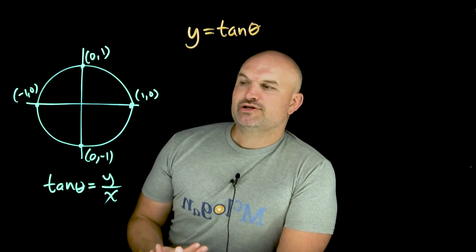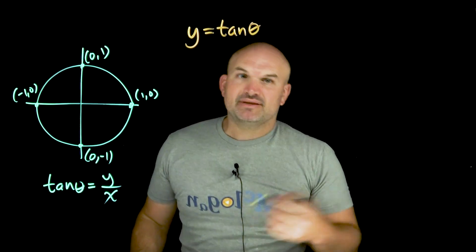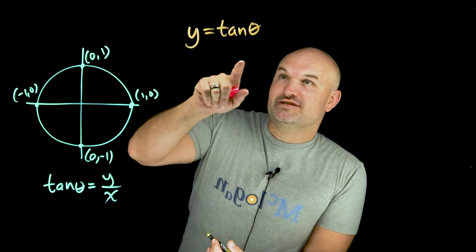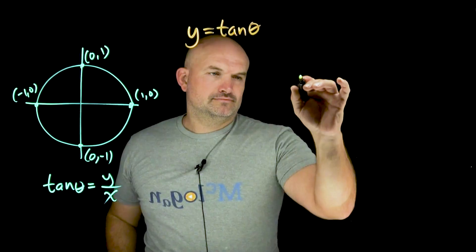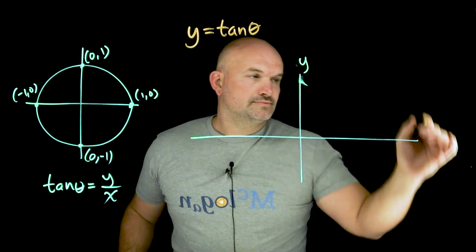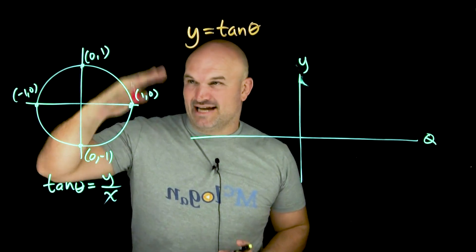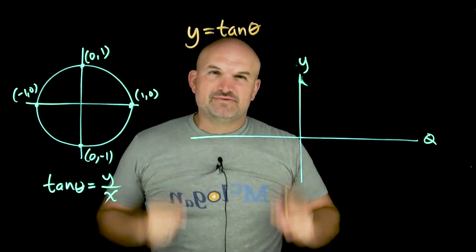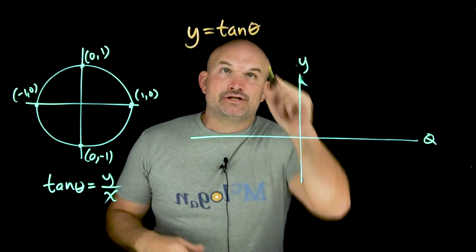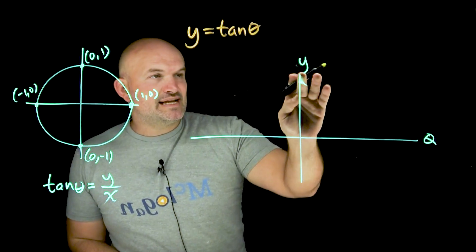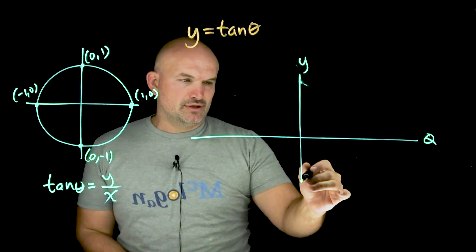So when we're graphing the tangent function, what we're doing is we're graphing it on an x,y plane, or at least in this case, it's going to be a theta y plane. Okay. So just remember theta is going to be your input variable. It's going to represent the angle that we're looking at, but also, a lot of times we reuse it with x or use alpha. You can use anything as your input variable. And then y is representing your output, which is going to be on this vertical line.